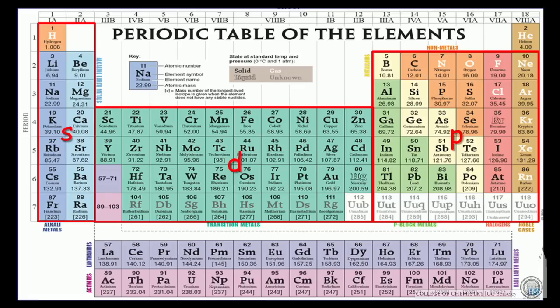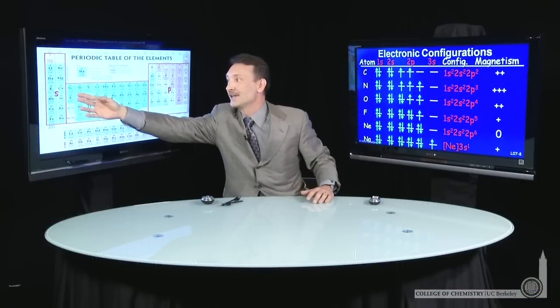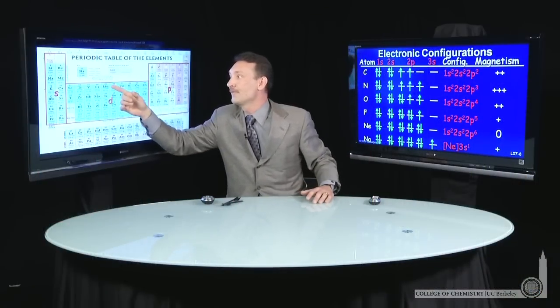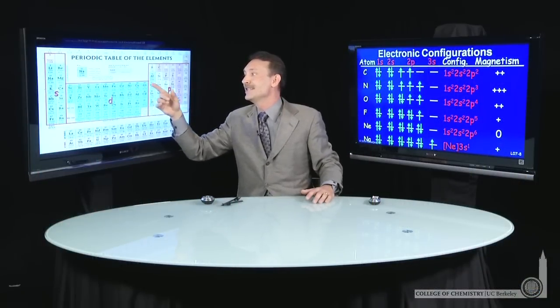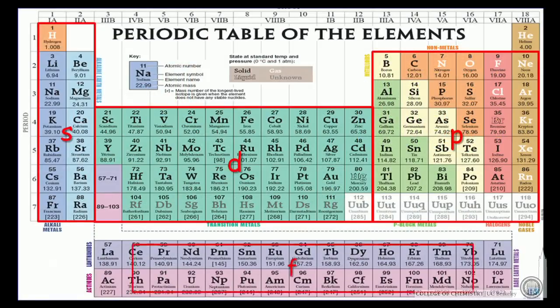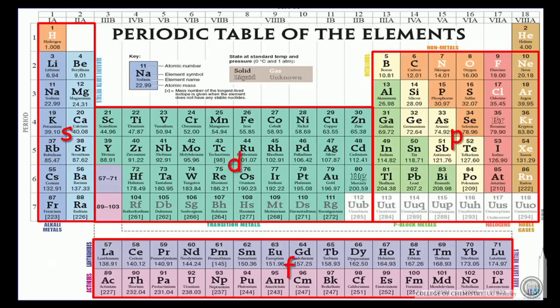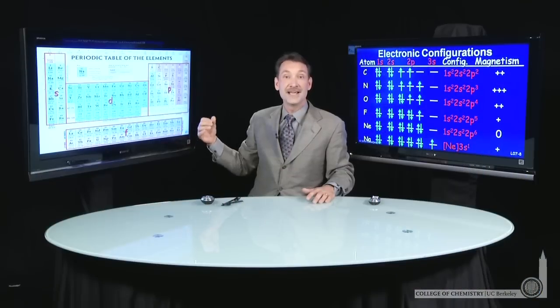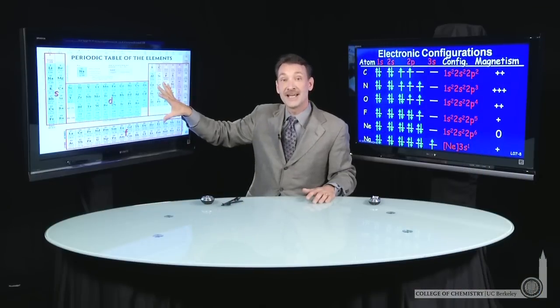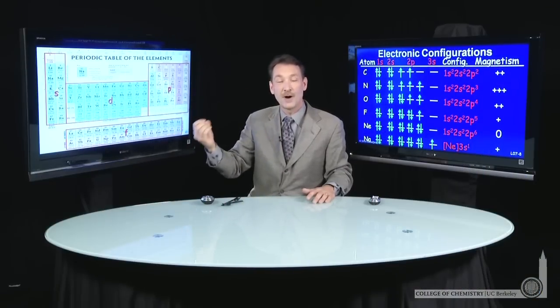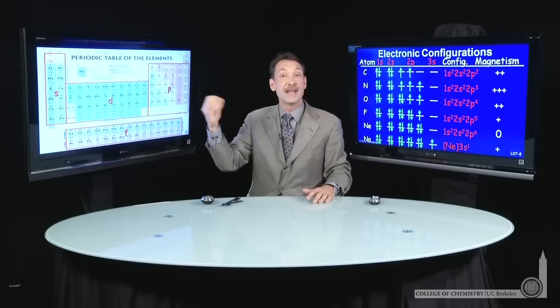That will fill the periodic table from left to right here with 1, 2, 3, 4, 5, 6, 7, 8, 9, 10 d electrons. When I go to f, I have 14 electrons filling up 7 equivalent orbitals. So we can see that the periodic table reflects the quantum mechanical structure of atoms. And now we understand that.